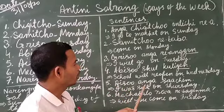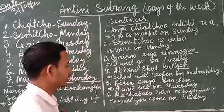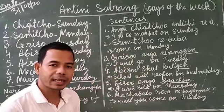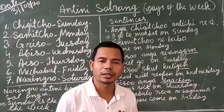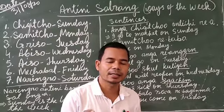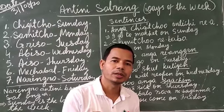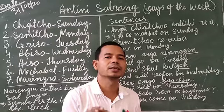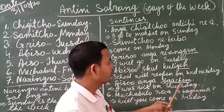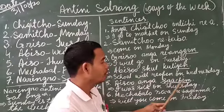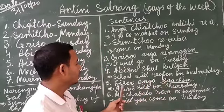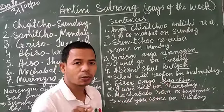Number five: ayiso ama sacheon — I was sick on Thursday. Ayiso means on Thursday. Sa — when spelled S-A-A — means sick or bukara or bima. Sacheon means was sick. Ama means I. So ayiso ama sacheon means I was sick on Thursday.